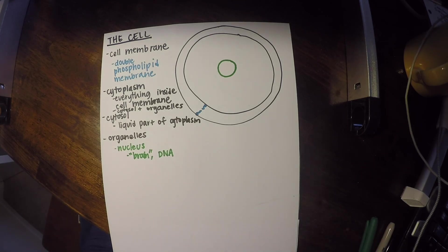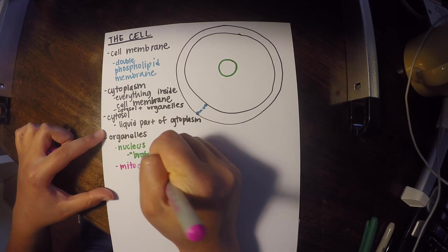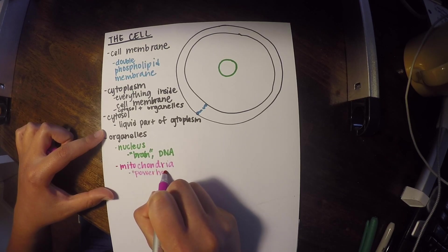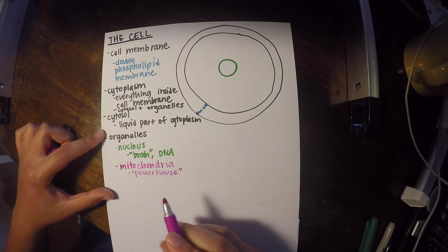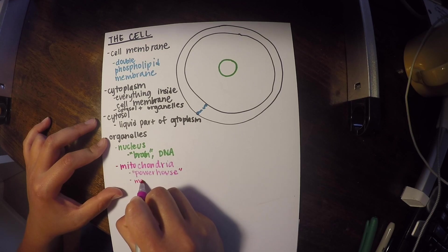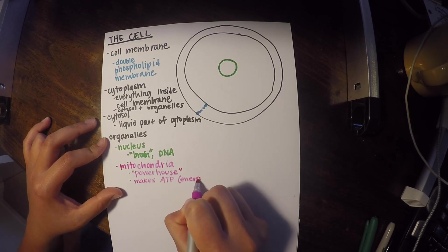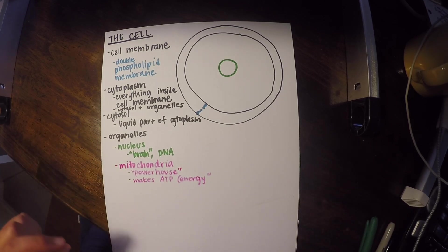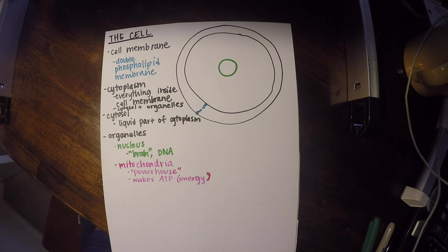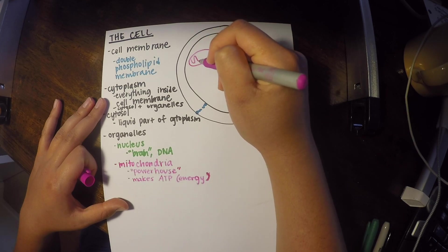Then you have something called the mitochondria, which is referred to as the powerhouse of the cell. And it's referred to that because it makes ATP, which essentially turns into energy. So that's why it has that name of the powerhouse of the cell. Let's draw that out. I'm going to draw out how it's drawn in most textbooks, which is usually in some sort of purpley pink color.